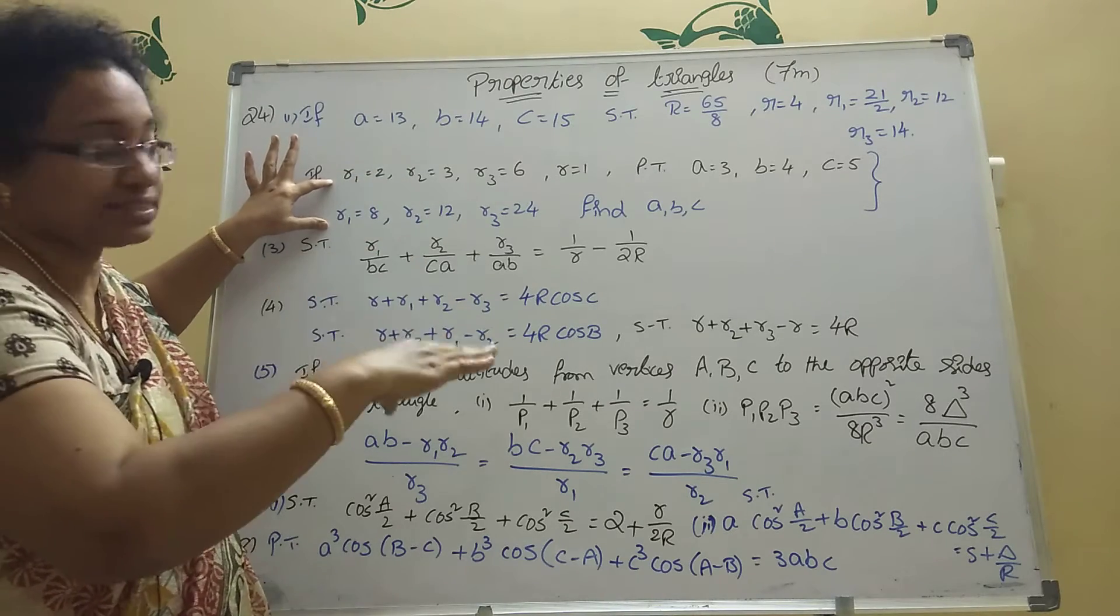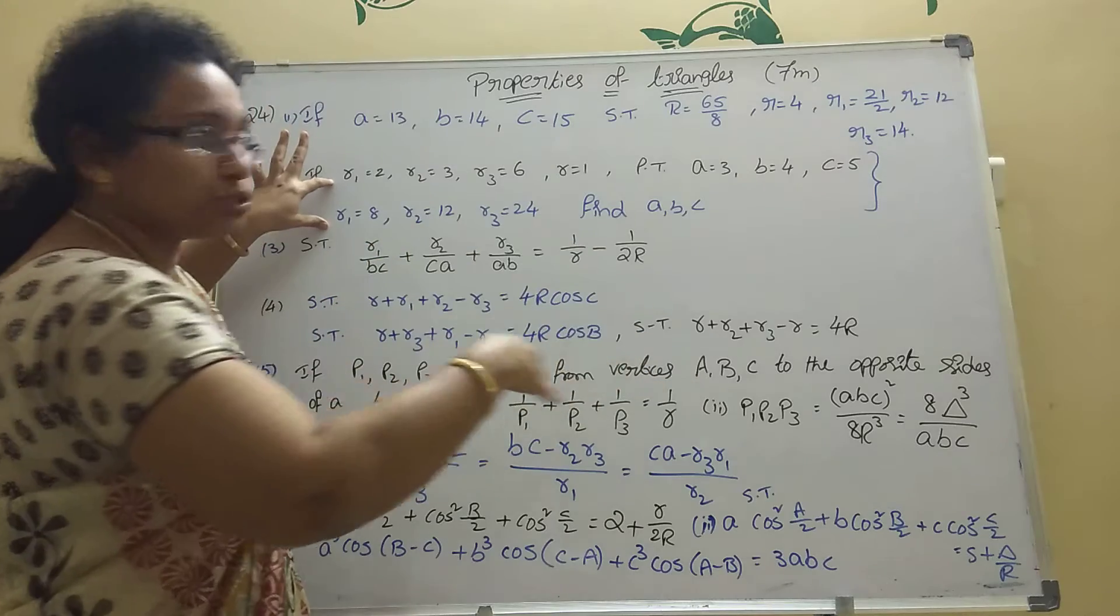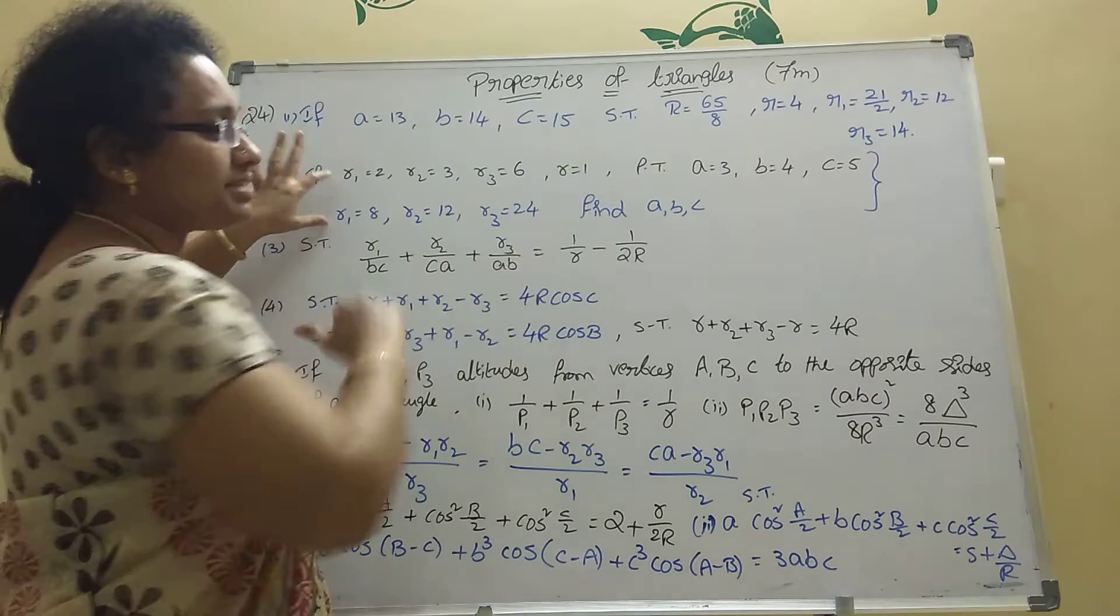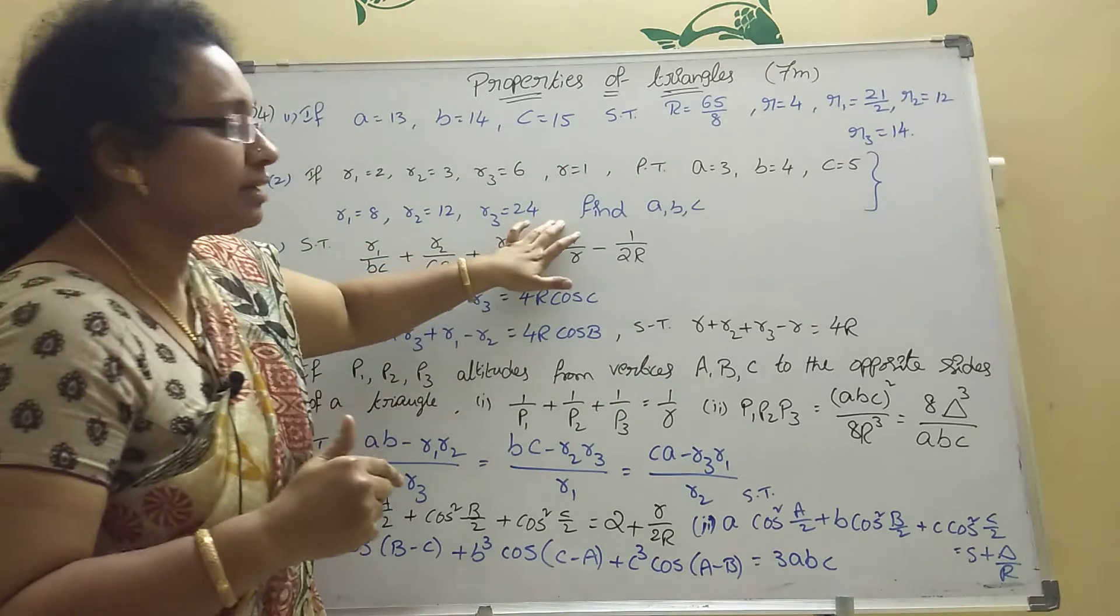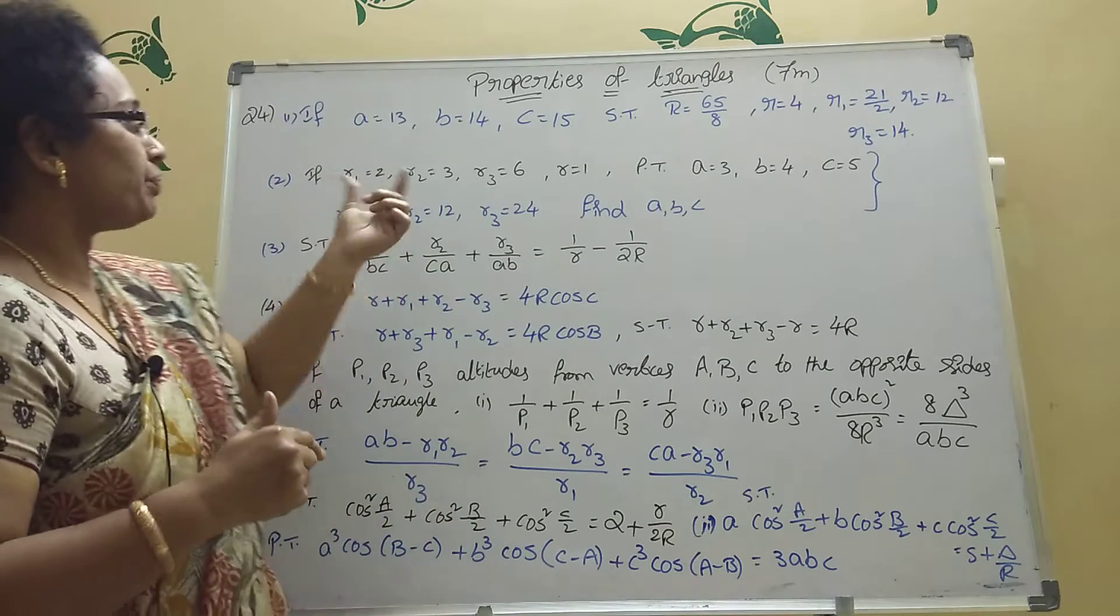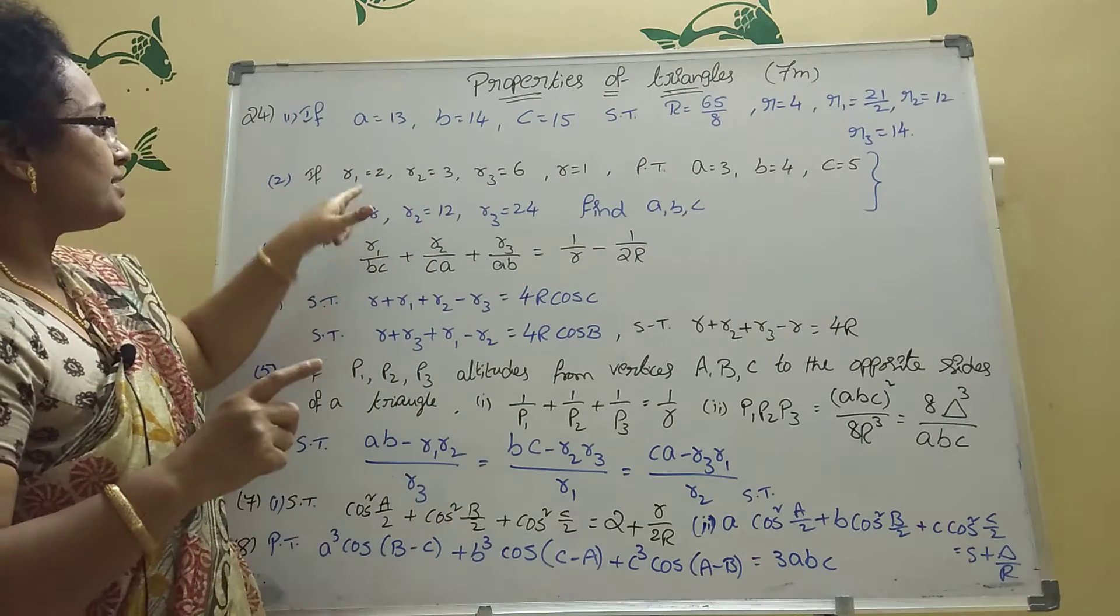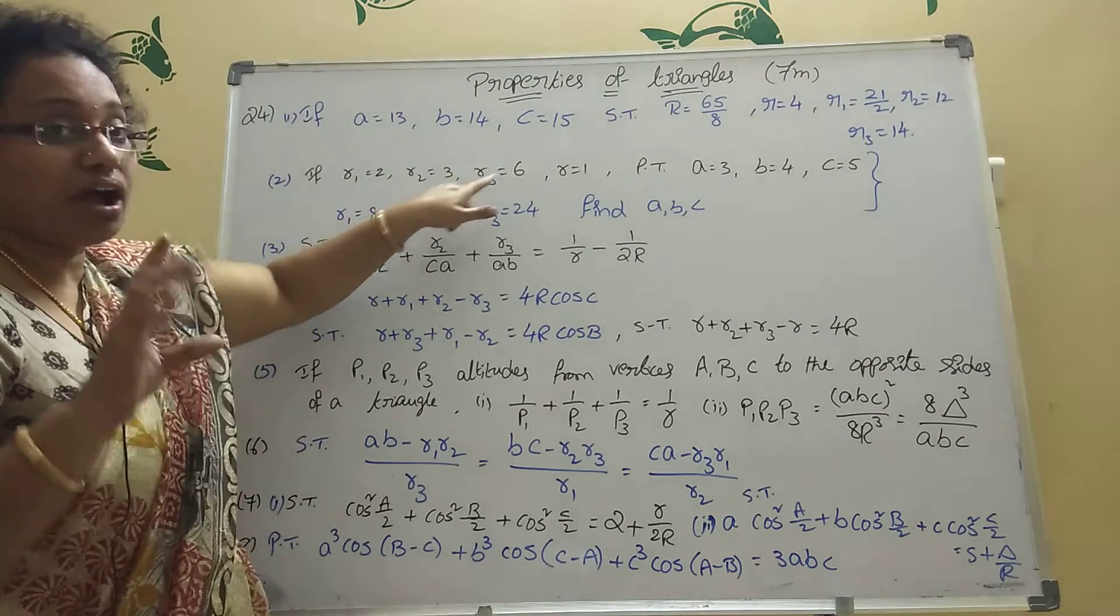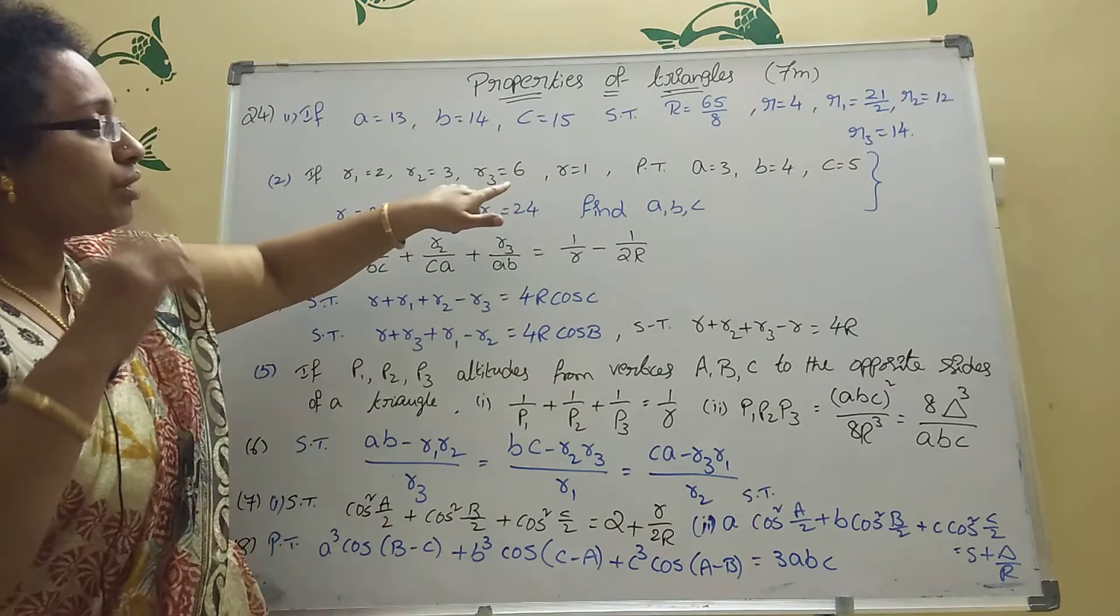Suppose here R1, R2, R3 is given, then you should find or should prove A, B, C given. Like that, you should find here ABC. Here given A equal to 3, B equal to 4, C equal to 5. Here see, this is the difference here. R1, R2, R3, R is given. Then here one formula is there. Delta square equal to R into R1 into R2 into R3.